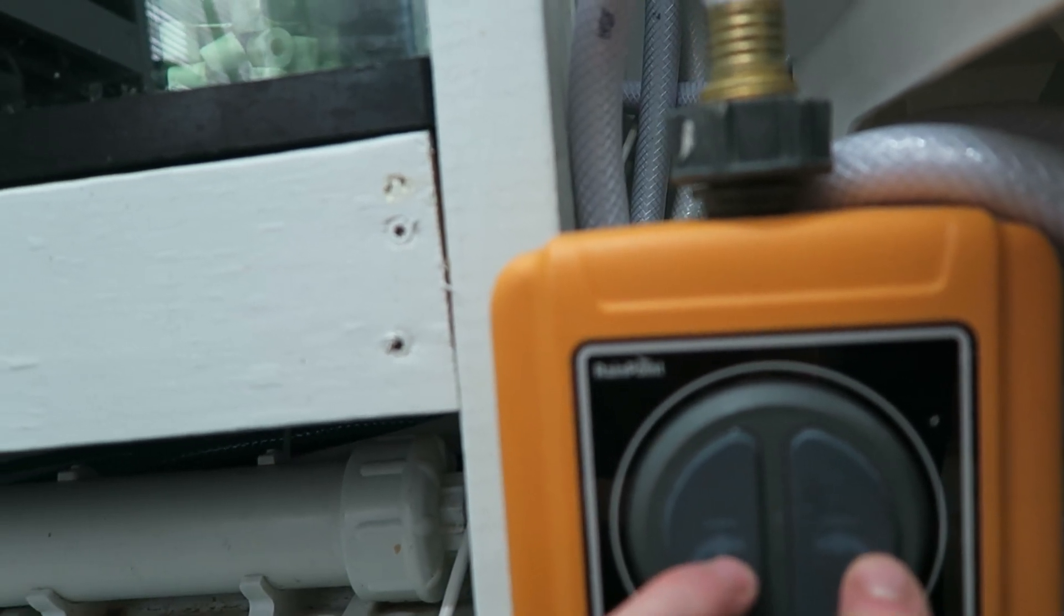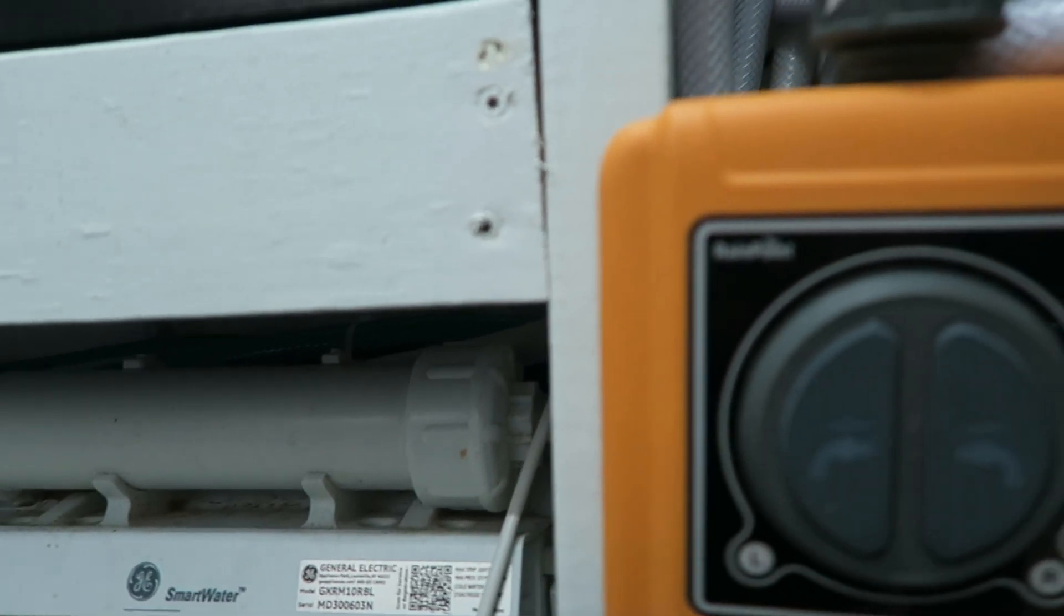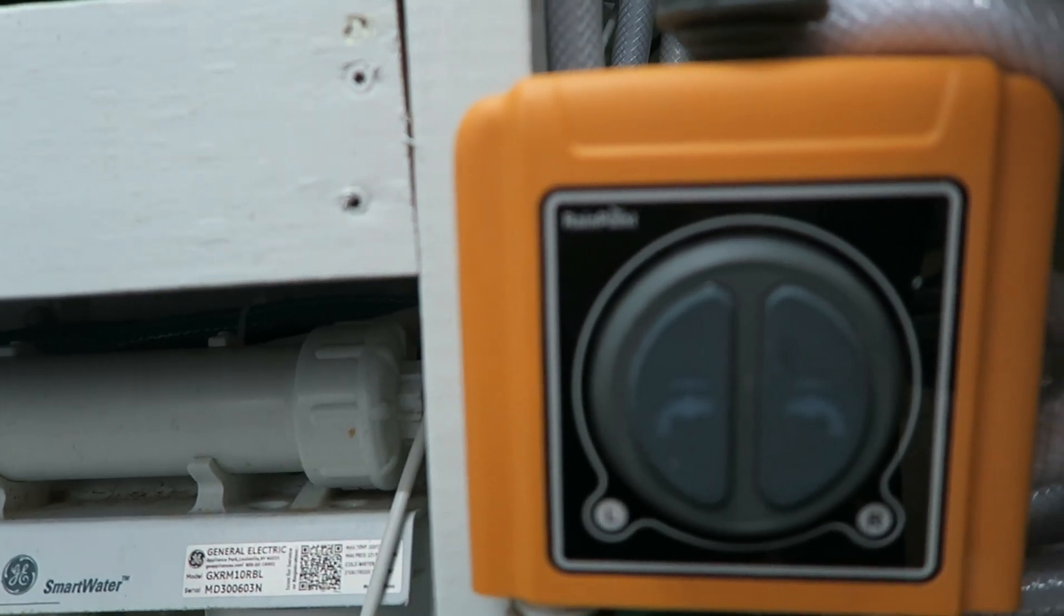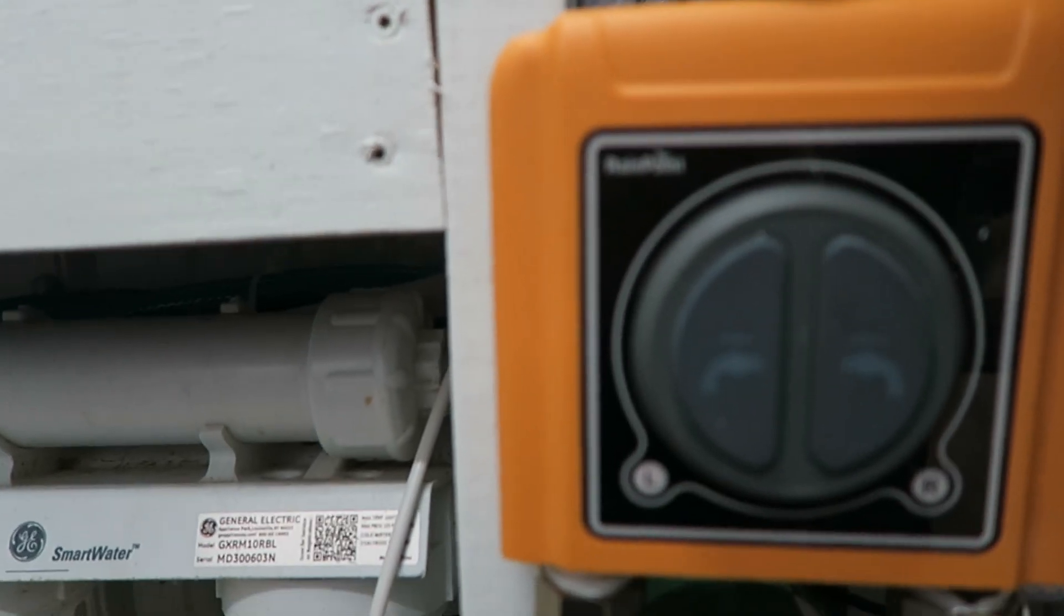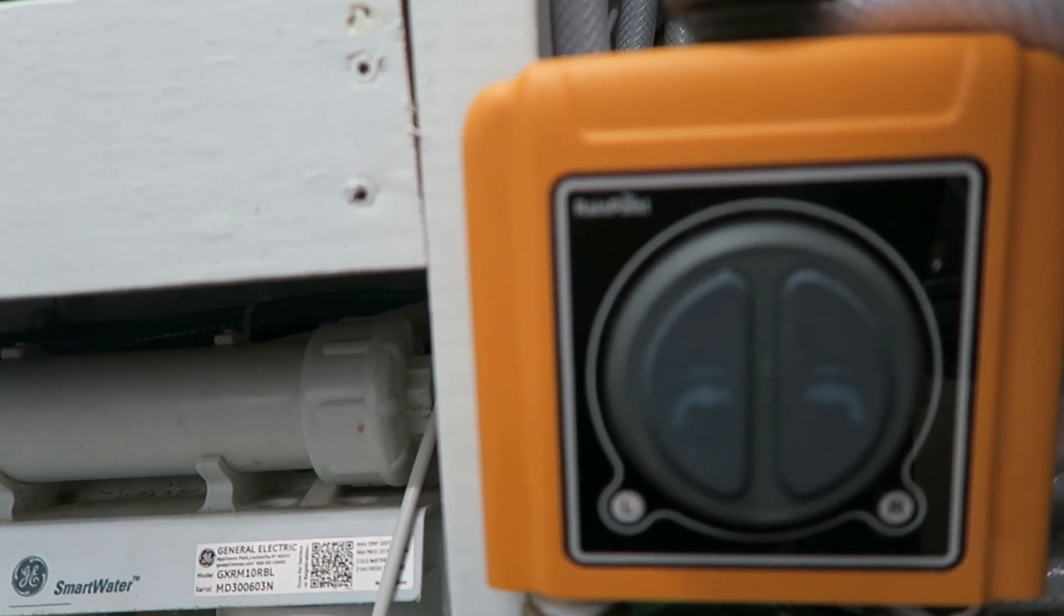I can set up different times and durations for it to go off. This is a two-zone controller and by pushing either side I can also manually run this system, or I can use my phone to manually run it, but I have it set up for automatic.